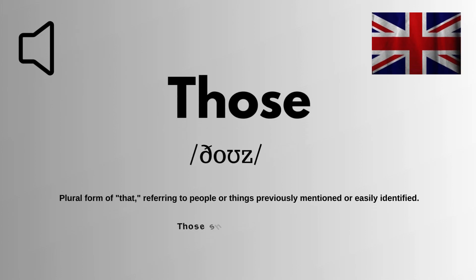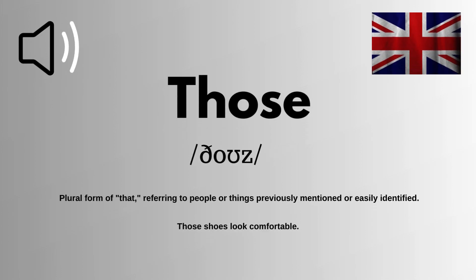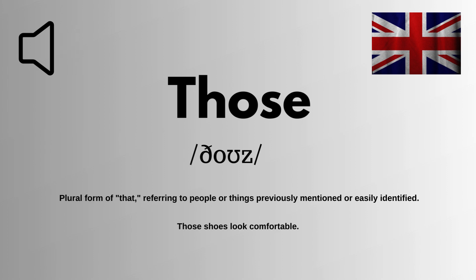We are looking at how to pronounce this word correctly in English. It is spelled as THOSE. The correct pronunciation of this word is THOSE. THOSE means plural form of that, referring to people or things previously mentioned or easily identified.